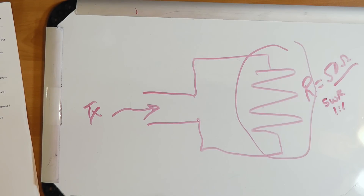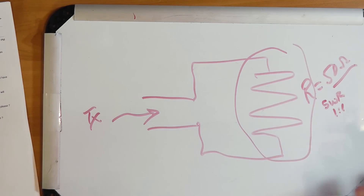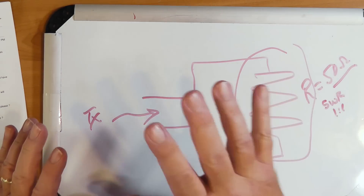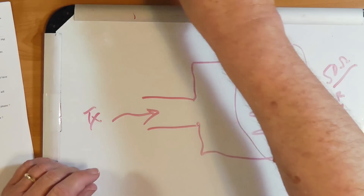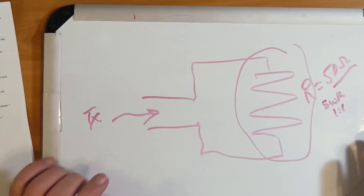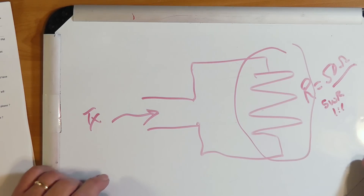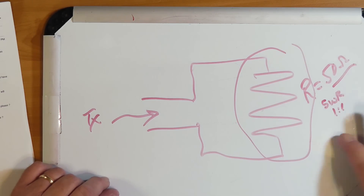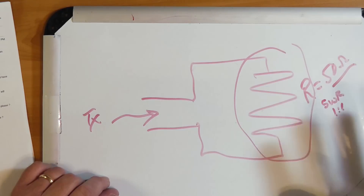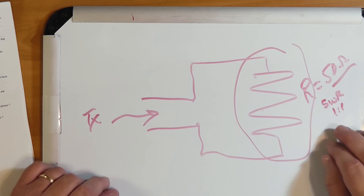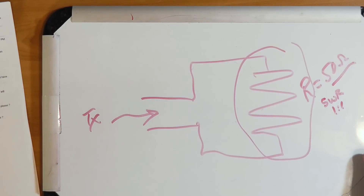This is very handy if you're testing something, having trouble with something, or for some reason wanting to transmit — like you're trying to adjust the controls, get the screen just the way you want it, and so on — meanwhile you're transmitting into a dummy load. You'll pick up a little signal a little ways away, but by and large it's all dissipated in here.